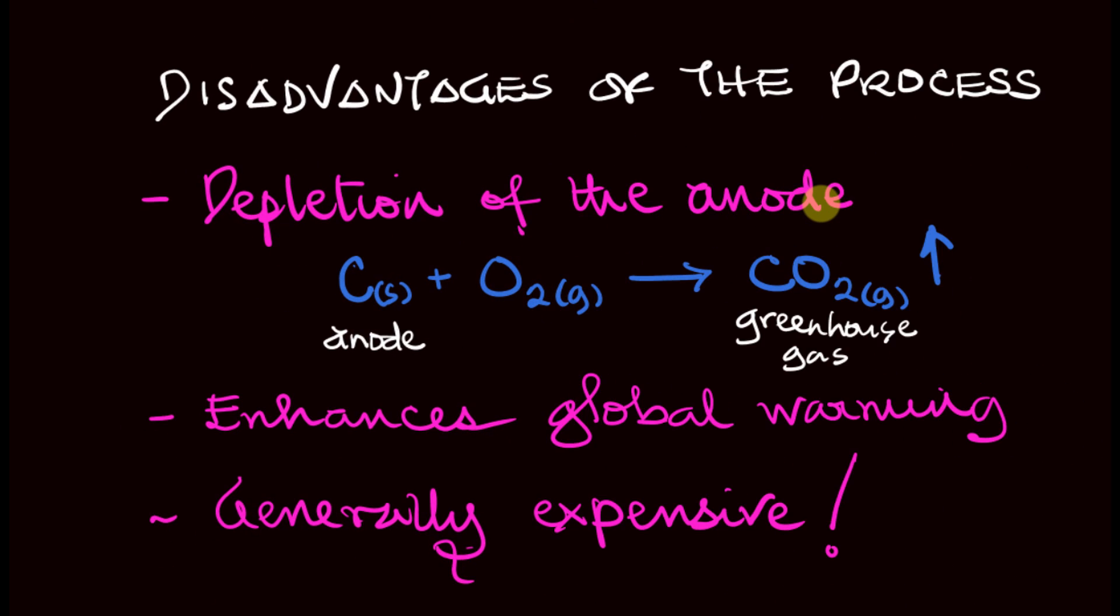First is the depletion of the anode, which comes from the reaction between the carbon blocks at the anode and the oxygen that is being produced at the anode. At high temperature, the oxygen produced at the anode reacts with the carbon anode to form carbon dioxide gas, which is blown away as a greenhouse gas. As this happens, it makes the anode wear off, and over a period of time those carbon blocks will need to be replaced. This is very, very expensive.